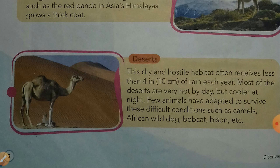Some animals live in desert, like camels. Desert is a dry and hostile habitat that often receives less than 10 centimeters of rain each year. Most deserts are very hot but cooler at night. Few animals have adapted to survive these difficult conditions, such as camels, African wild dog, bobcat, and bison.